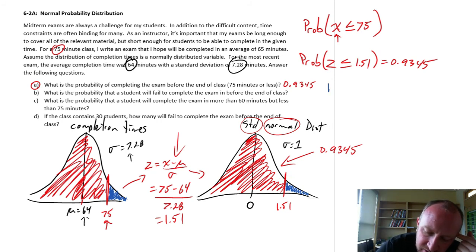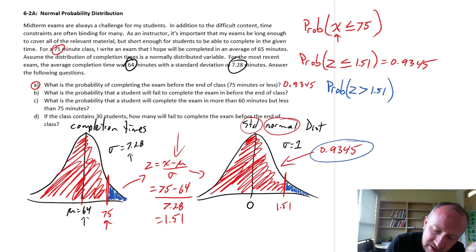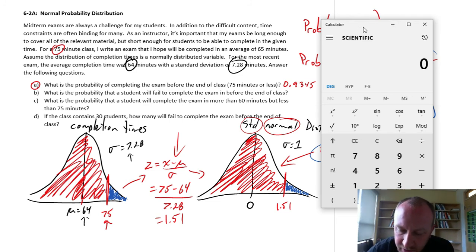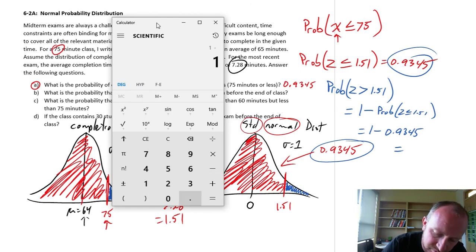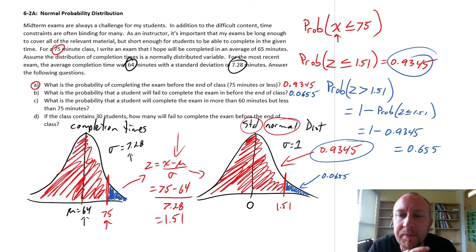So in order to obtain that, if I now want to figure out the probability that z is greater than 1.51, well, if the area under the curve is equal to 1, I know that this red area is equal to 0.9345, so this is equal to 1 minus the probability of it being less than or equal to 1.51, which is what we've already calculated here. So this is 1 minus 0.9345, which is equal to, 1 minus 0.9345 equals 0.0655. So there's this area under the curve, 0.0655, and that's the probability that a student fails to complete the exam before the end of class.